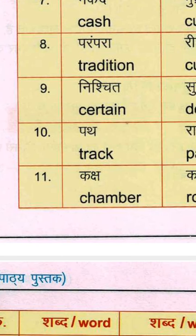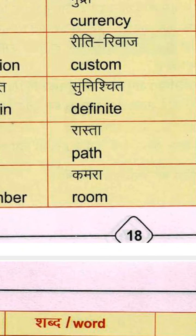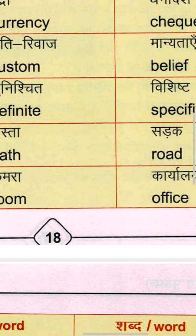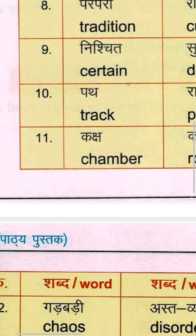Parampara means Tradition. Ritirivaj means Custom — C-U-S-T-O-M. And Manyatayen means Belief — B-E-L-I-E-F.